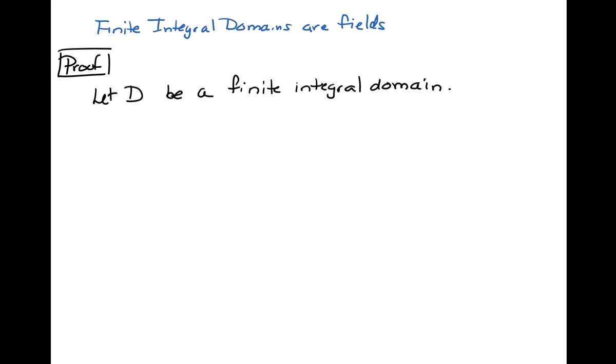I'm not going to write out scratch work for this proof. This proof is pretty simple. Let's suppose that we have a finite integral domain. If we have a finite integral domain, we can list out the elements d1, d2, all the way to dn.